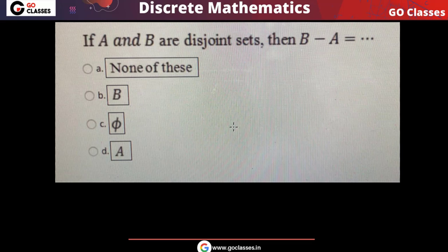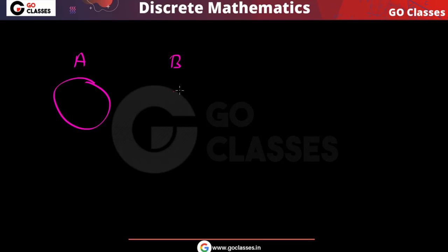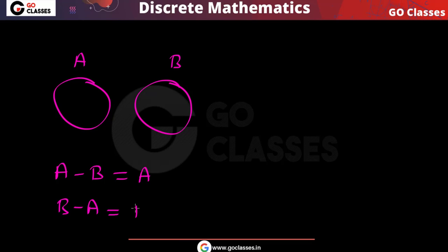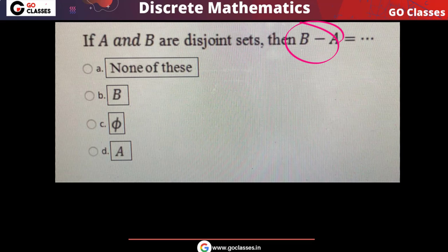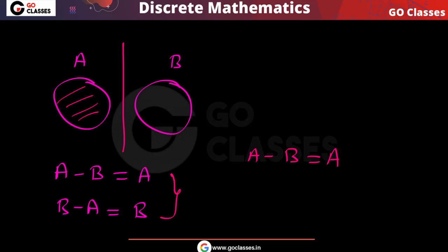If A and B are disjoint sets, what is B minus A? Since A and B have no common elements, B minus A means elements in B but not in A — which is simply B, because all elements of B are only in B. Similarly, A minus B equals A. So the answer is B minus A = B.